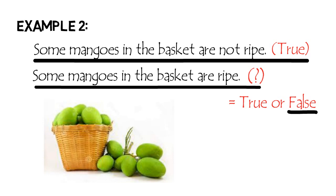Or, there is at least one mango on the other side or in the middle of the basket that we do not see — because we are just facing one side containing unripe mangoes — that is ripe. Hence, 'Some mangoes in the basket are ripe' is true.